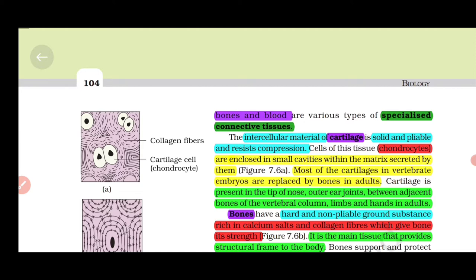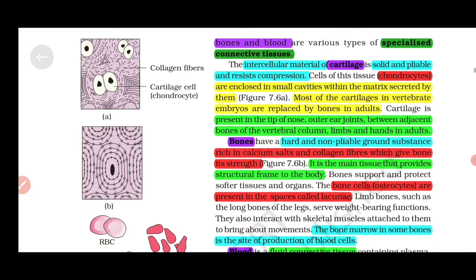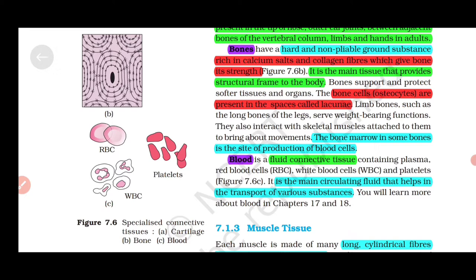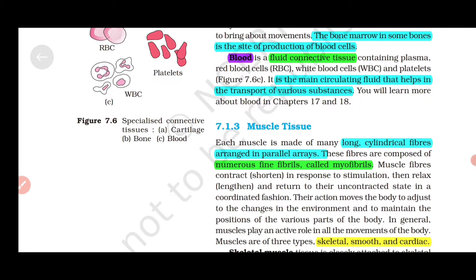Cartilage, bones, and blood are various types of specialized connective tissues. The intercellular material of cartilage is solid and pliable and resists compression. Cells of this tissue, called chondrocytes, are enclosed in small cavities within the matrix secreted by them. Most cartilages in vertebrate embryos are replaced by bones in adults. Cartilage is present in the tip of nose, outer ear joints, between adjacent bones of the vertebral column, limbs, and hands in adults. Bones have hard and non-pliable ground substance rich in calcium salts and collagen fibers which give bone its strength. It is the main tissue that provides structural frame to the body. Bone cells called osteocytes are present in spaces called lacunae. The bone marrow in some bones is the site of production of blood cells. Blood is a fluid connective tissue that helps in transport of various substances.